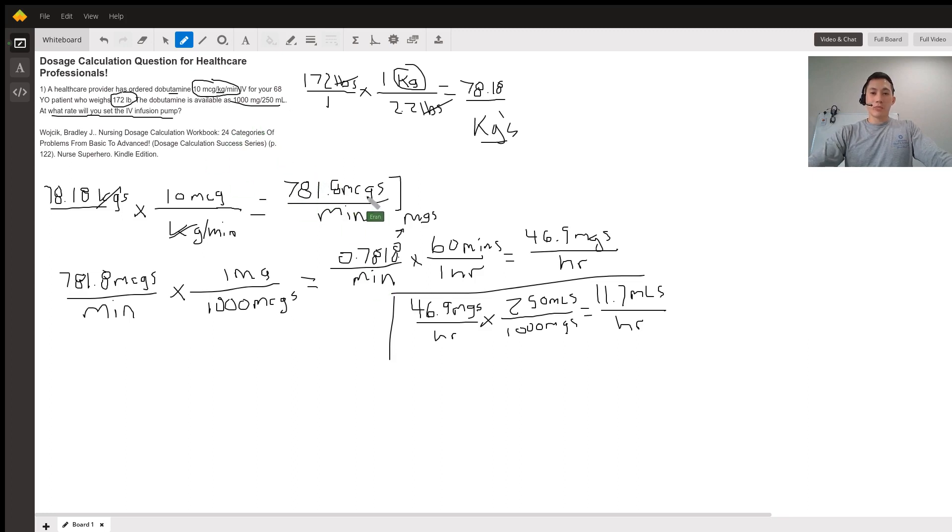We need to get 781.8 micrograms per minute into milligrams and also convert to per hour. We take 781.8 micrograms per minute and multiply it by our conversion: 1,000 micrograms per milligram. We cross out micrograms here and here.